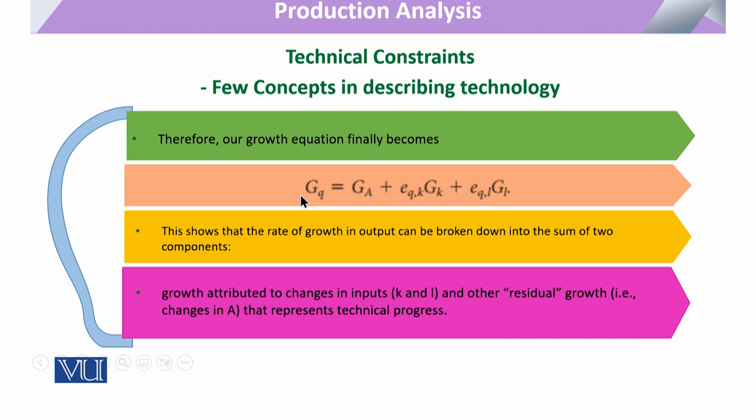The total change in output is the sum of three components: change due to technology, plus change due to capital multiplied by the elasticity of production with respect to capital, plus growth related to labor multiplied by the elasticity of production with respect to labor. This equation allows us to estimate, for any observed growth over time, how much is the share attributable to labor productivity, how much to capital productivity, and how much is attributable to technology alone.